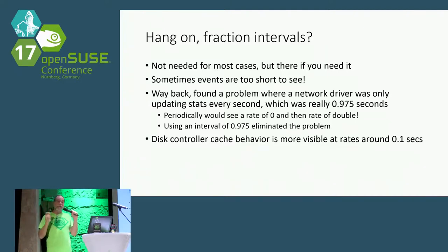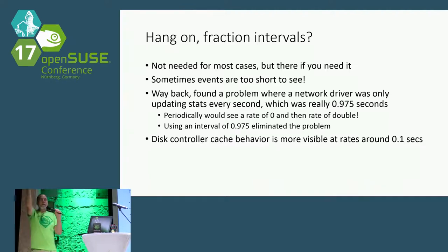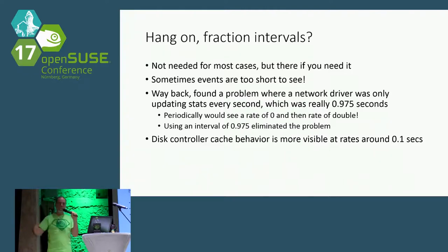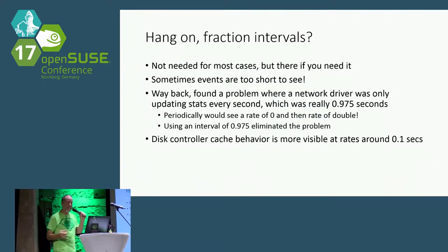By changing the monitoring interval to 0.975 seconds in Collectl, all the columns showed up with the right numbers, because that was the frequency that the driver was actually updating the statistics. It's a trivial thing but it makes a difference.